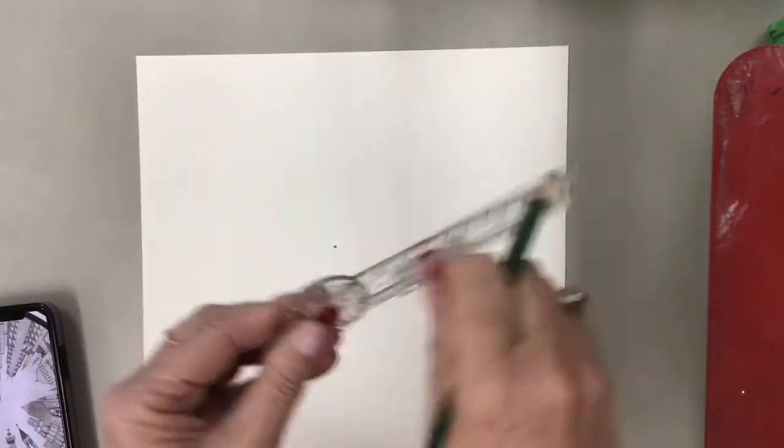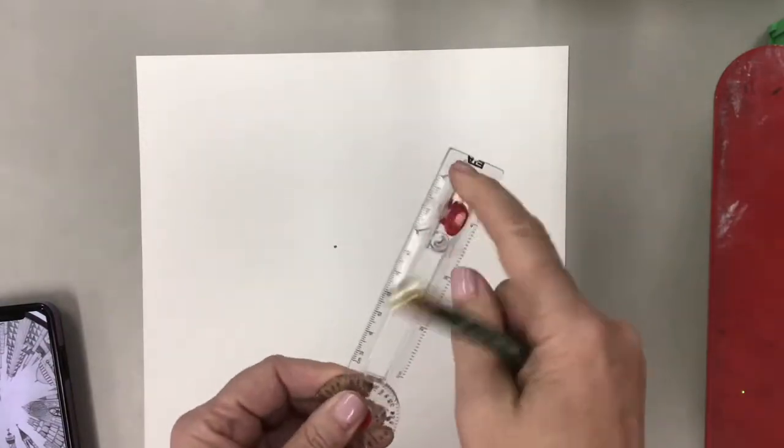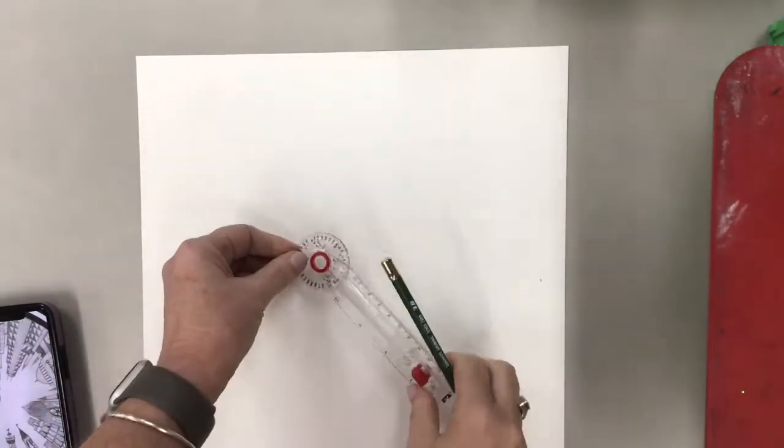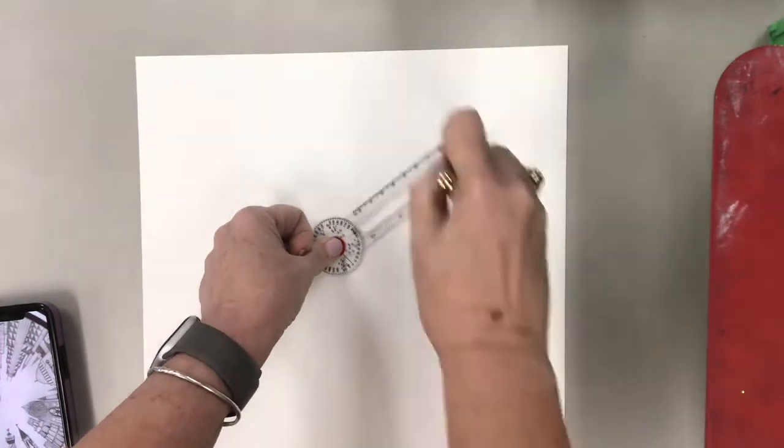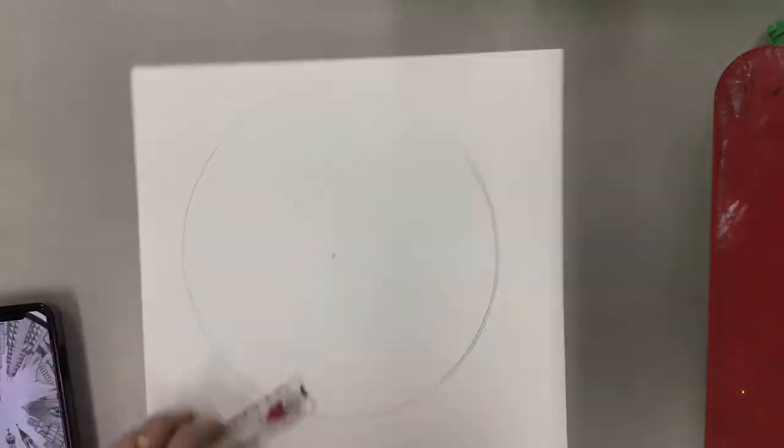All right, now we have these safety compasses. You lock that slidey bit into its largest setting, and then you put the center on top of your vanishing point and you put your pencil in and draw your circle. Easy peasy.